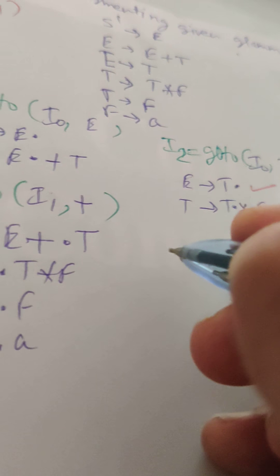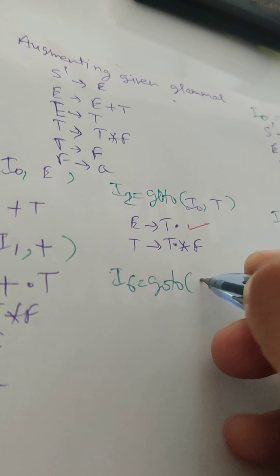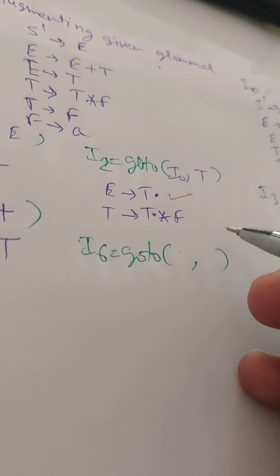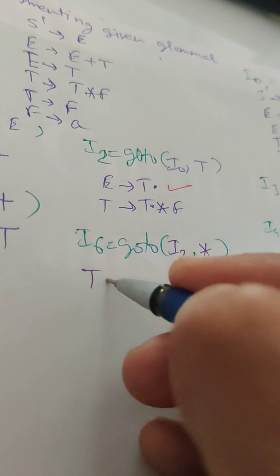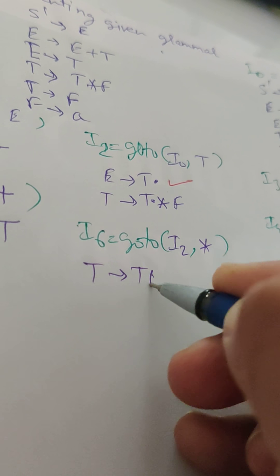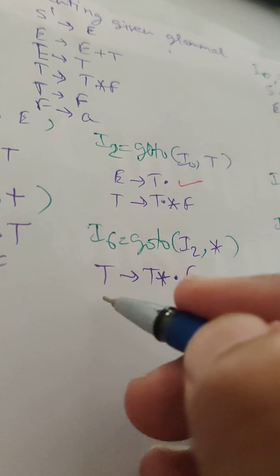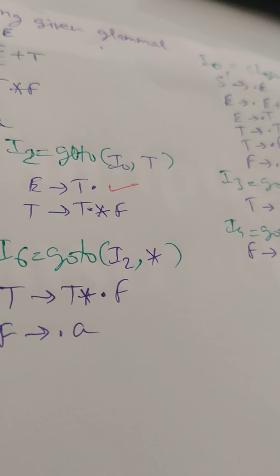Next is I6, the GOTO of I2 on star. We get T → T*.F, and after the dot is non-terminal F, so we add F → .A (terminal a). Item I6 is now complete.